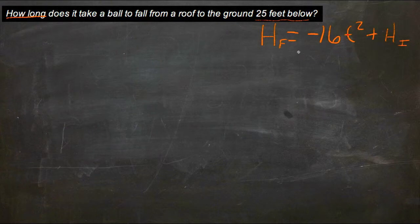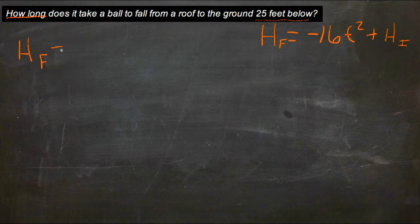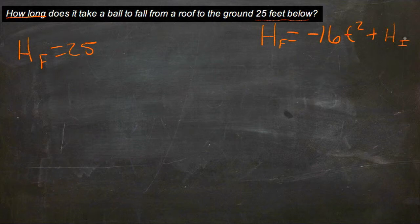So if we use our formula, final height is equal to negative 16 times t squared plus initial height, then we can solve this pretty easily. We'll go ahead and leave height final. We know it's going to be 25.